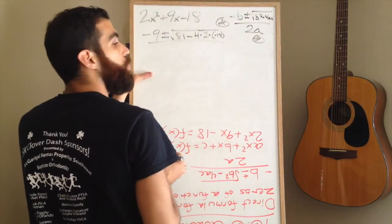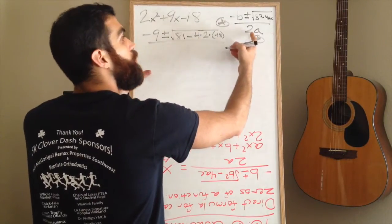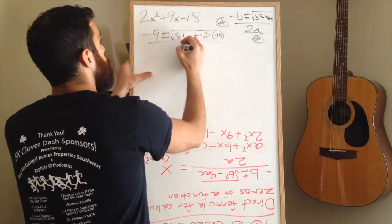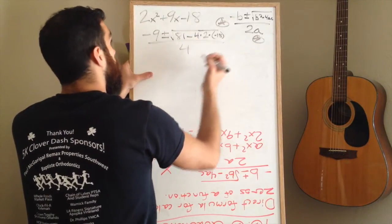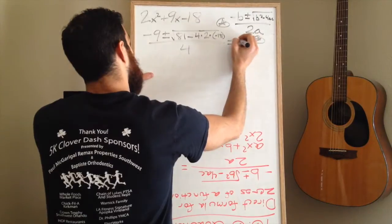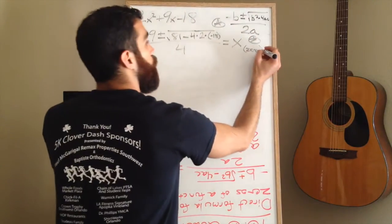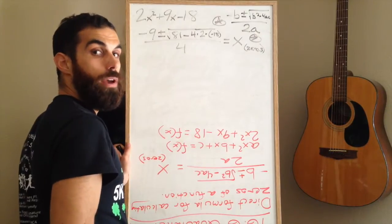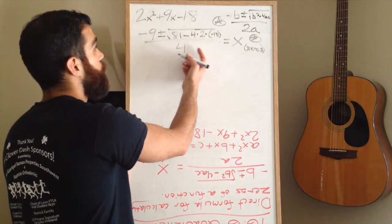This entire thing is the numerator of a fraction over 2 times a in the denominator. a is 2, 2 times 2 is 4. Again, this entire function equals x, which will be the zeros of your final answer. Now, all we have left to do is simplify this radical.